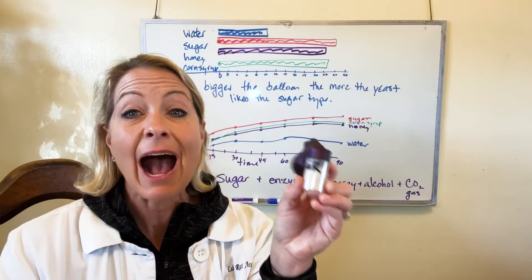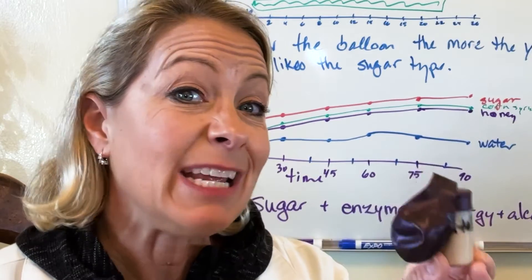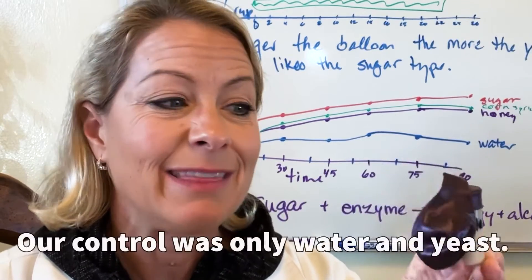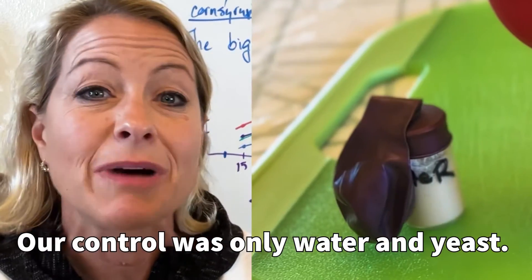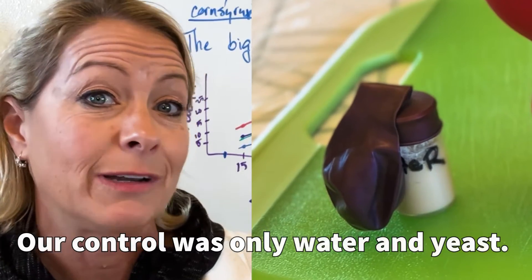Obviously we have to have a control. In the control we don't put any sugar, so it was just water and yeast. They didn't have much carbon dioxide forming in that one at all.